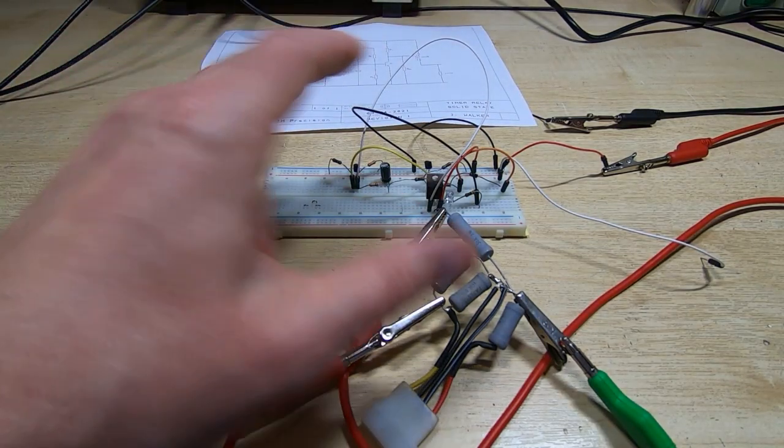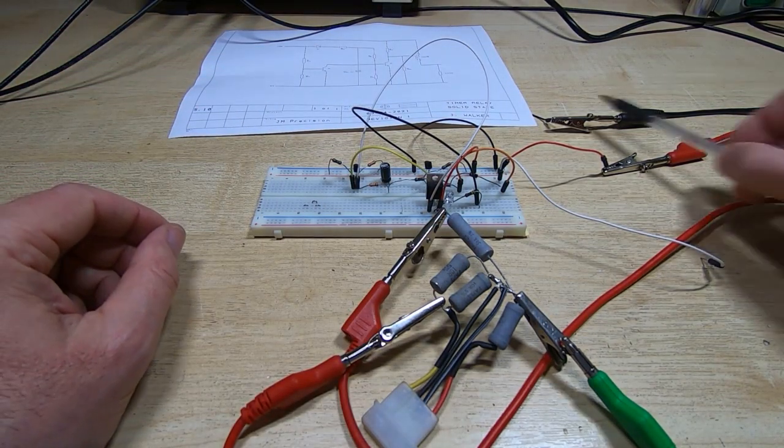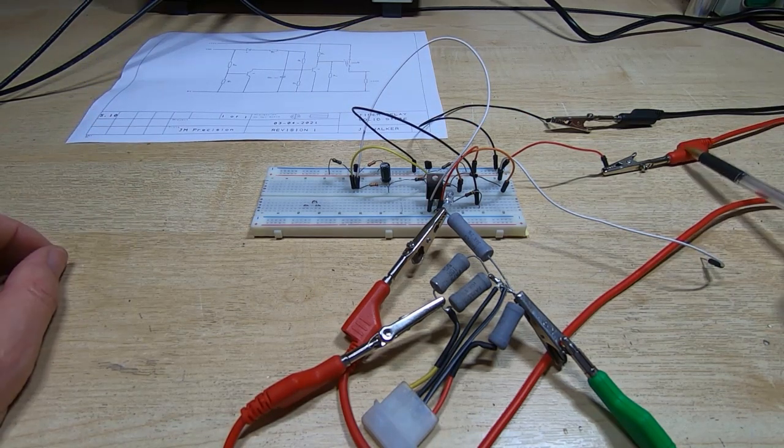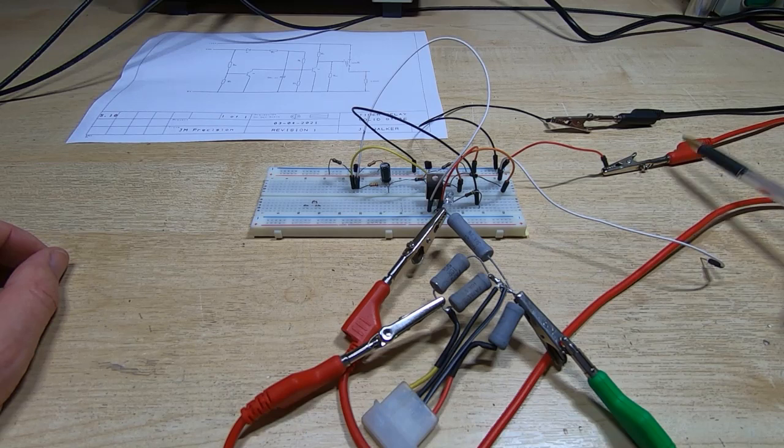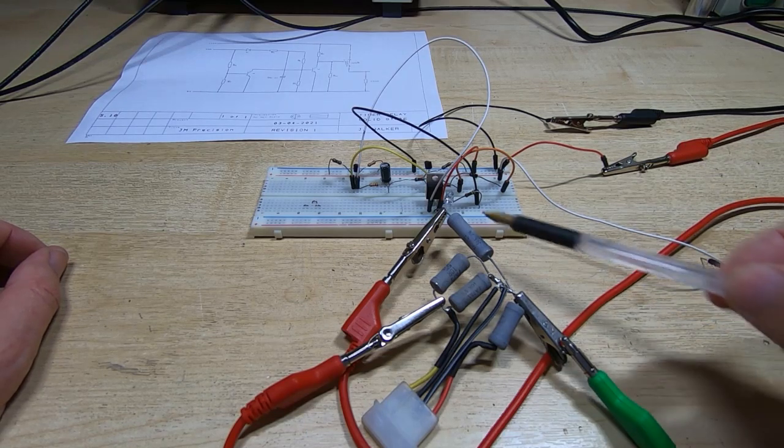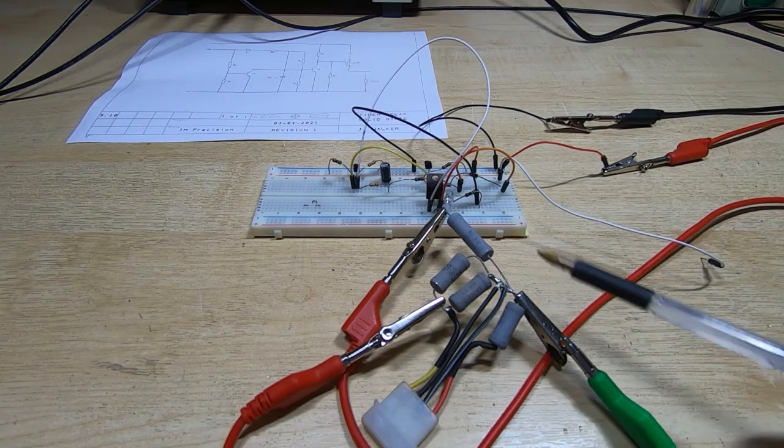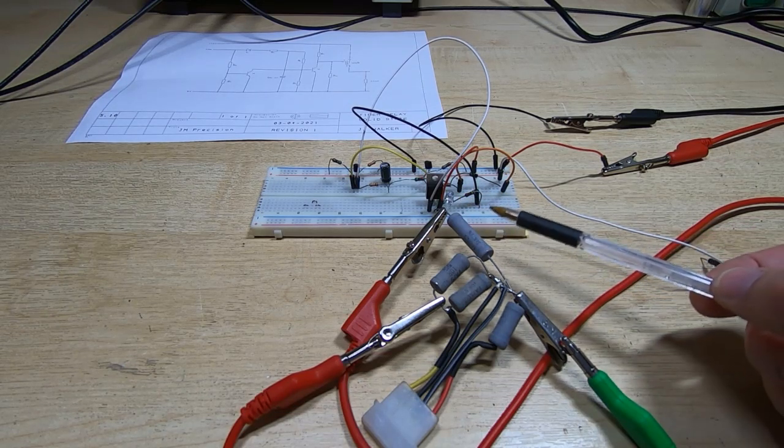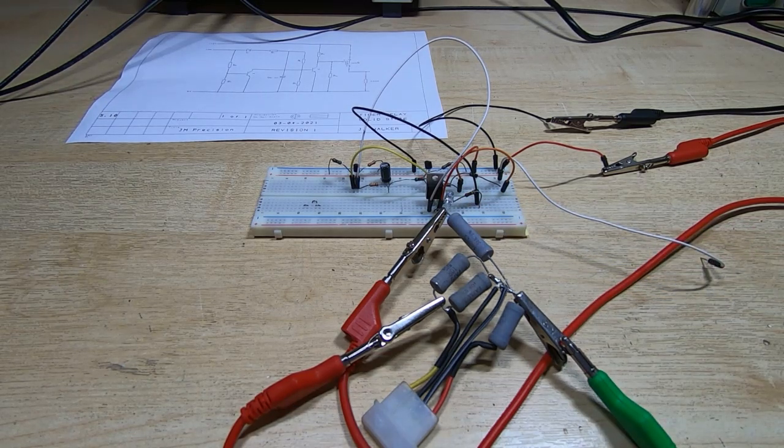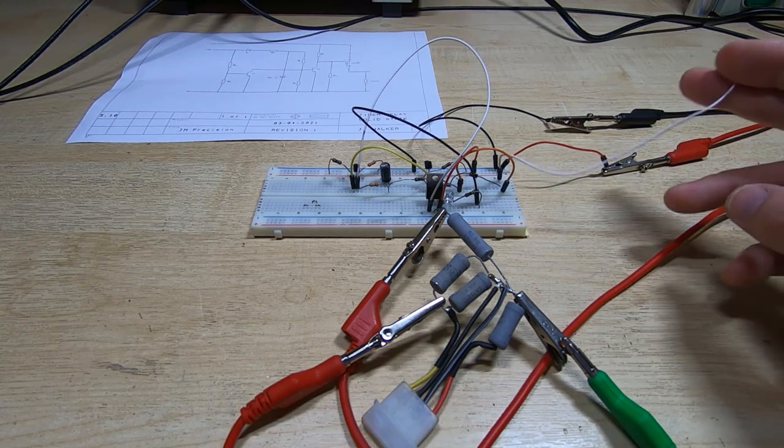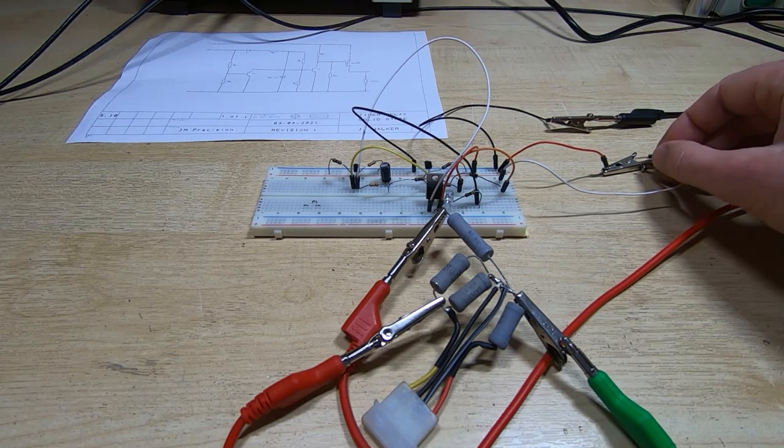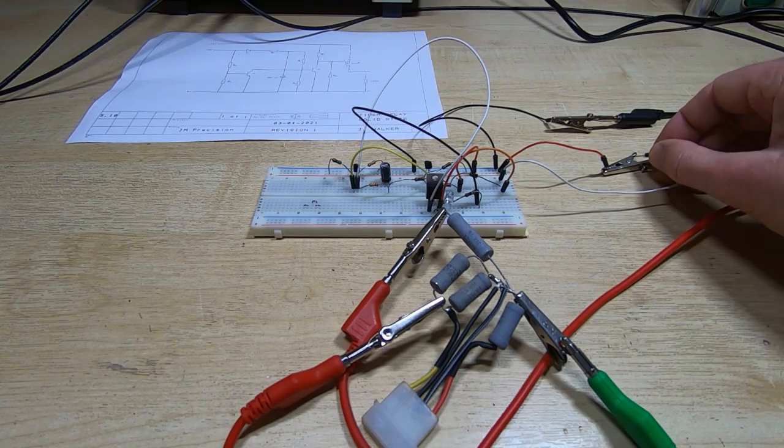I've got the circuit hooked up - we've got ground coming in through the black lead, I've got the permanent 12 volts coming in through the red, and we've got a dummy load here just a few resistors. The LED is wired across them so we can see that it's actually doing what it's supposed to.